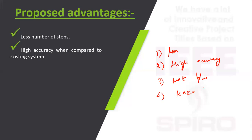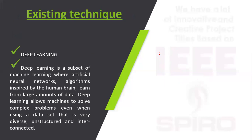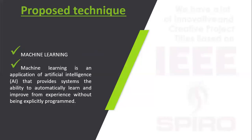In the existing system they are using deep learning. Deep learning is an advanced classification algorithm that uses multiple stacked layers of operations. In our proposed system we are using machine learning. With machine learning the operating speed is high, and it is easy to understand compared to the existing deep learning system.